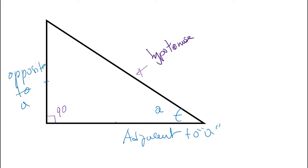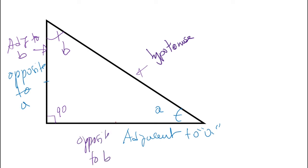If we take angle B, this side will be adjacent to B and this one will be opposite to B. You look first at the angle and see which side is touching it — if it's touching the angle it is adjacent, and if it's in front we call it opposite.